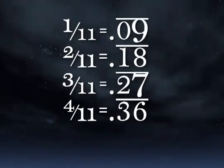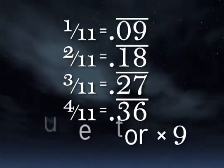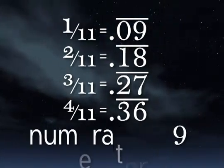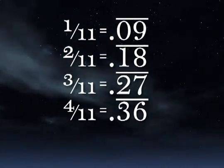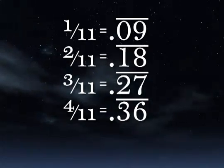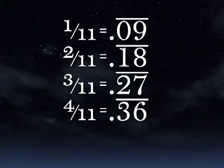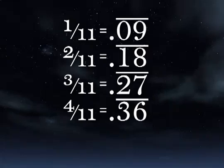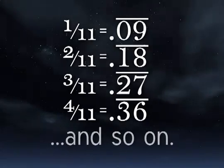The elevenths are also easy. Just take the numerator and multiply by 9. 1 eleventh is 0.09 repeating. 2 elevenths is 0.18 repeating. 2 times 9 is 18. 3 elevenths is 0.27 repeating, and so on.